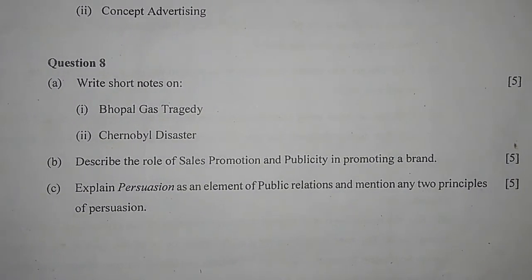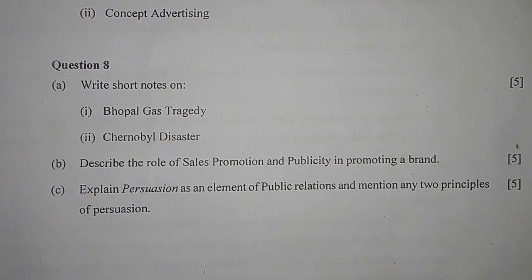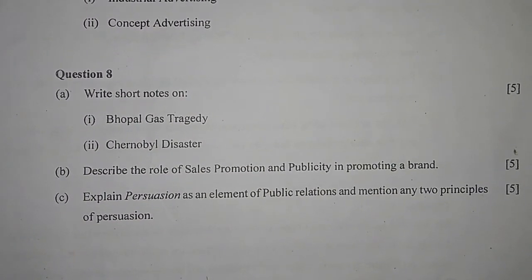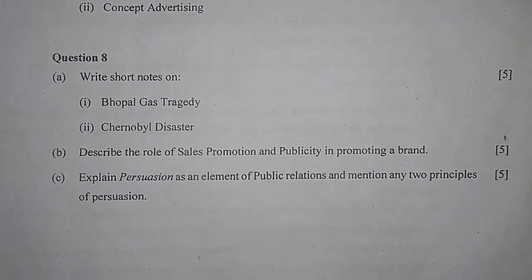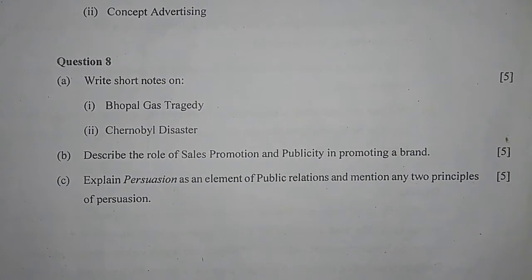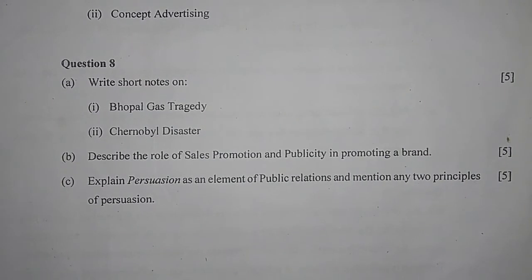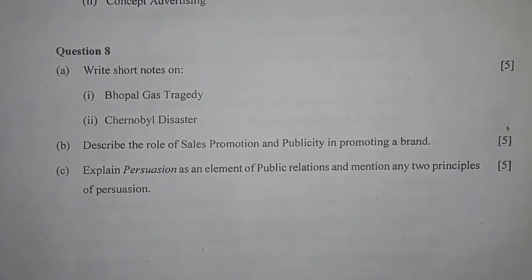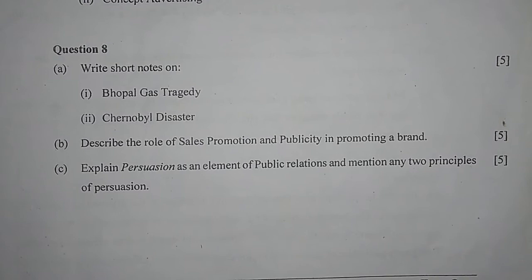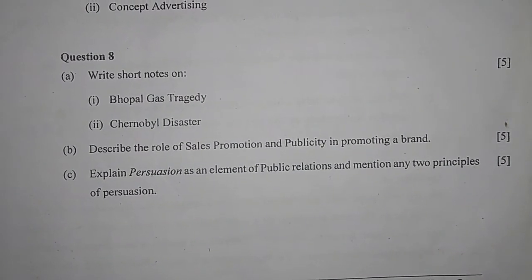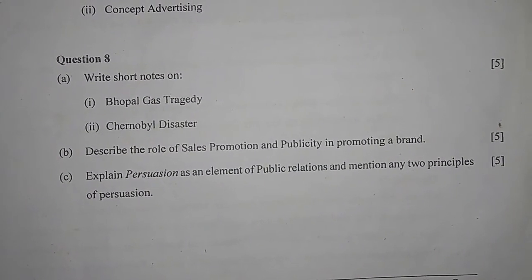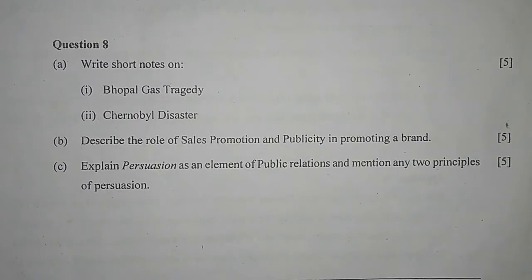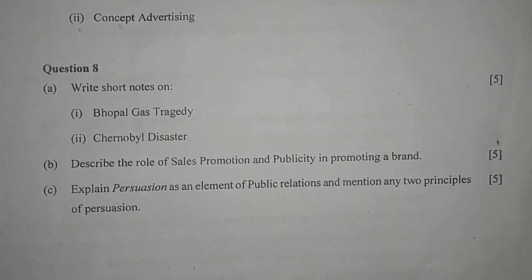Write short notes on number one: Bhopal Gas Tragedy. This is very easy, you can answer this with your own words. The Bhopal Gas Tragedy, also called the Bhopal disaster, was a gas leak incident in Bhopal, Madhya Pradesh. It occurred on the night of 2nd December 1984 at the Union Carbide factory. The chemical leaked was methyl isocyanate. Over six lakh people were exposed to this toxic gas, resulting in the death of around 15,000 people, and many more were harmed.